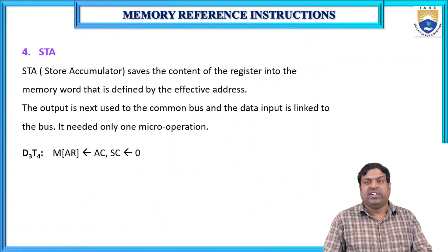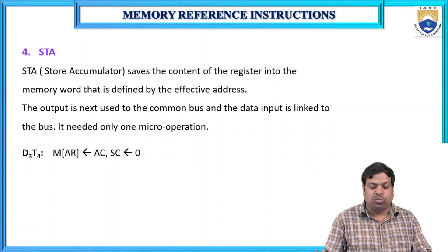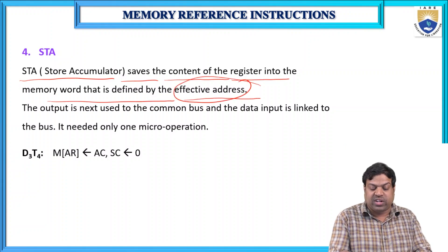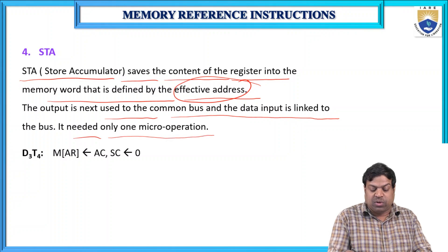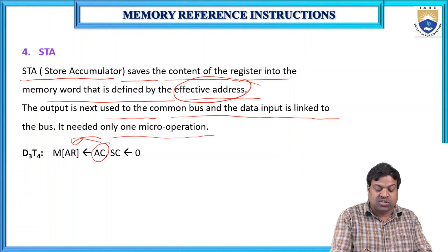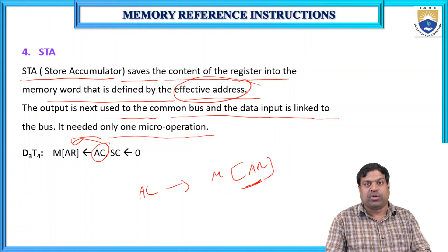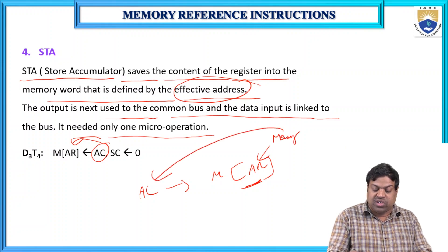STA (Store Accumulator) saves the content of the accumulator into the memory word defined by the effective address. The output is connected to the common bus, and it needs only one micro-operation: AC → M[AR]. The current accumulator value is stored into the specific memory address.